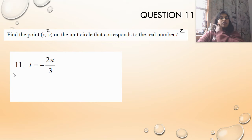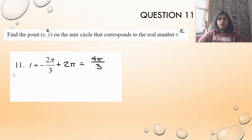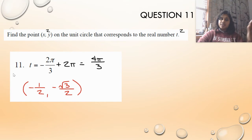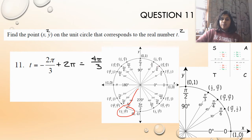Let's do that one more time with negative 2π over 3. I have to adjust and put it in standard form, so I add 2π, which is 6π over 3, giving me positive 4π over 3 — that's the value I'll work with. Using the full unit circle, I go over to 4π over 3, find the coordinate point, and confirm the answer: negative 1 half, negative square root of 3 over 2.